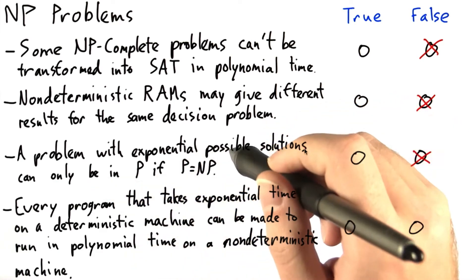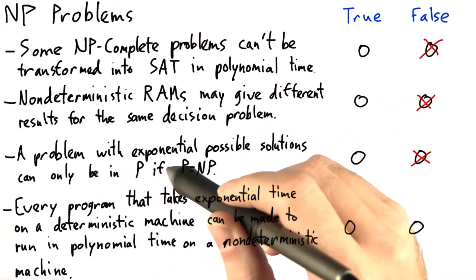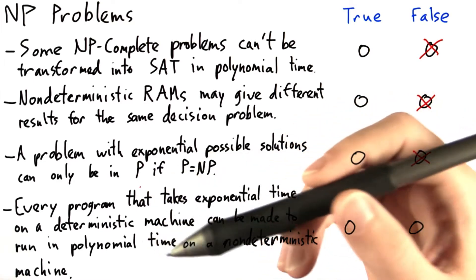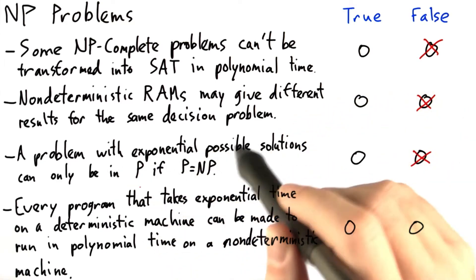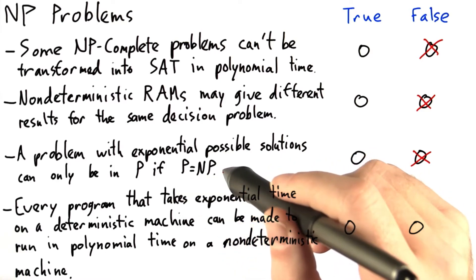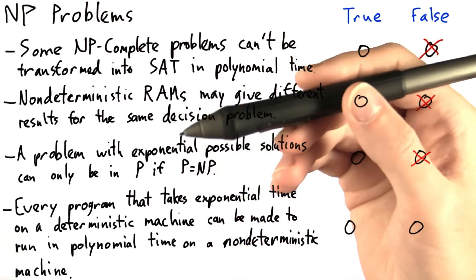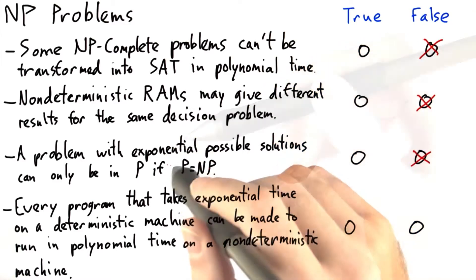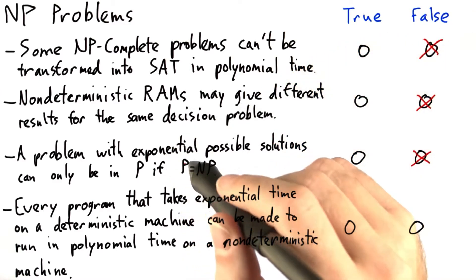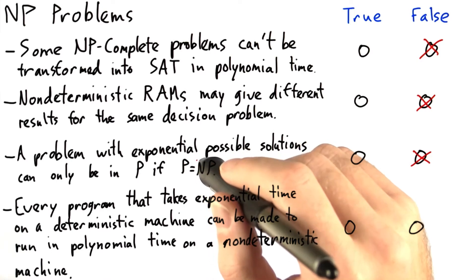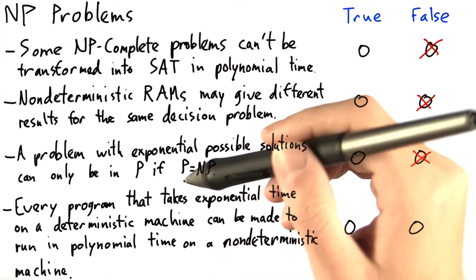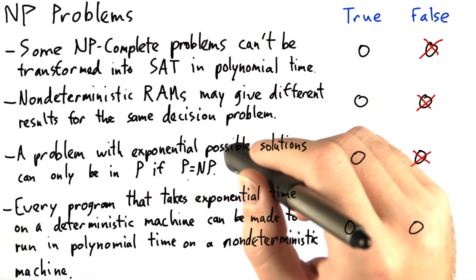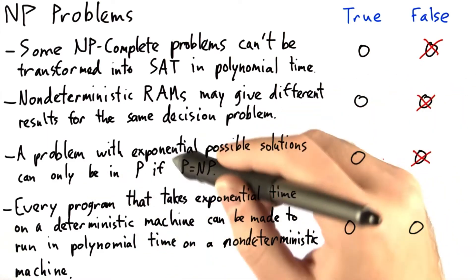The third problem is also false. A problem with exponential possible solutions can only be NP if P equals NP. A good problem to see this on is sorting. Whenever you sort a list of n elements, there are exponentially many different possible sorts. But there are quite a few sorting algorithms that can find the correct sort in much shorter than exponential time. So this statement is actually not true.